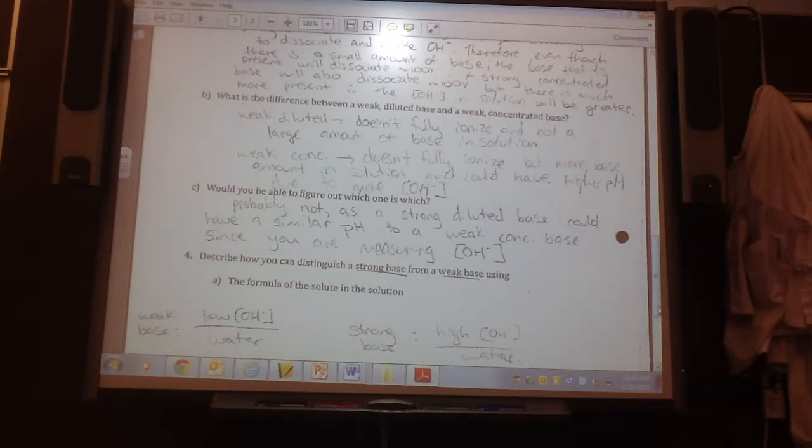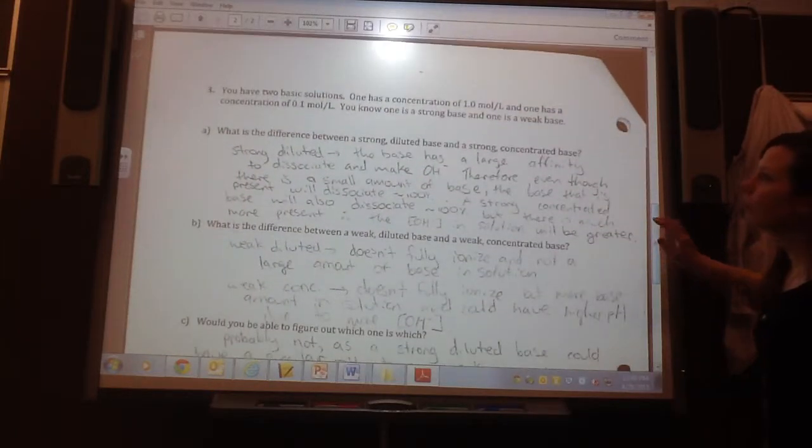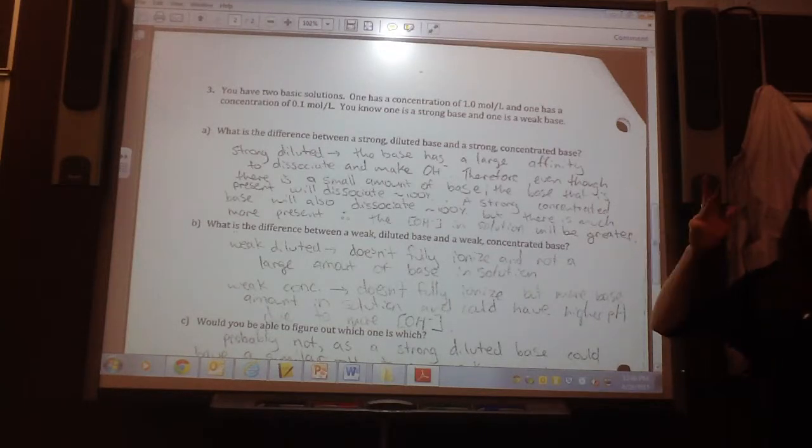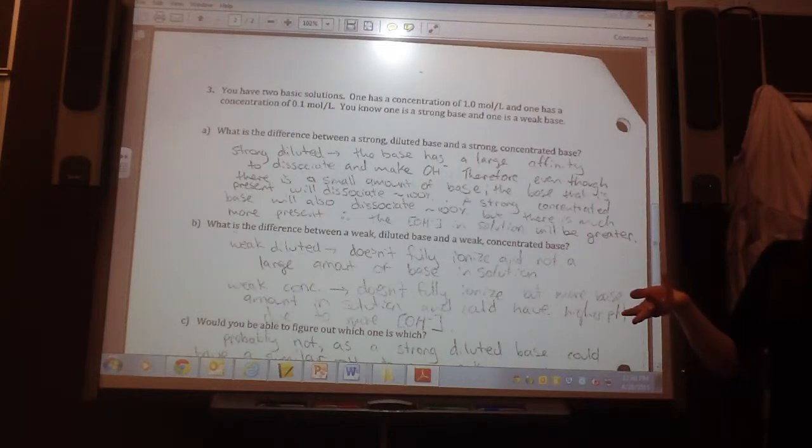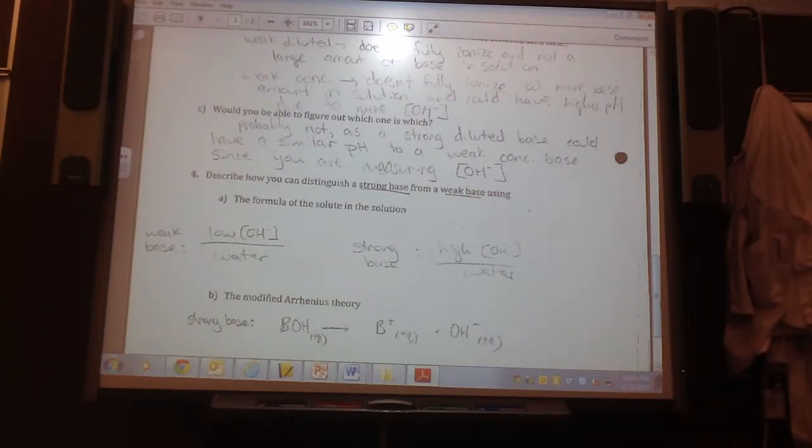Would you be able to figure out which one is which? So, because either, from our original question, you're told you have two basic solutions. One is concentrated, and one is diluted. One is strong, and one is weak. You don't know which one is strong, which one is weak, which one is concentrated, and which one is diluted. So, you can actually figure this one out. If you just measured the pH, you wouldn't be able to know. Because a strong, diluted base can have the same pH as a weak concentrated base. Because you're measuring hydroxide ions.